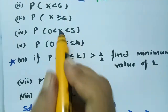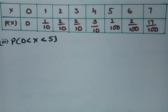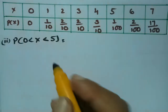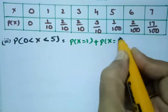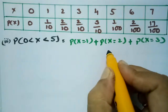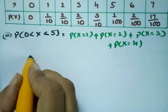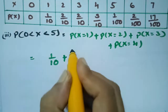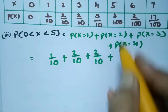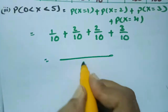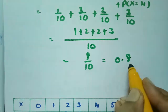The next question is P(0 < X < 5). Here X is strictly greater than 0 and less than 5, so we add P(X=1) + P(X=2) + P(X=3) + P(X=4). The values are 1/10 + 2/10 + 2/10 + 3/10. Taking LCM as 10, this is 8/10 = 0.8.